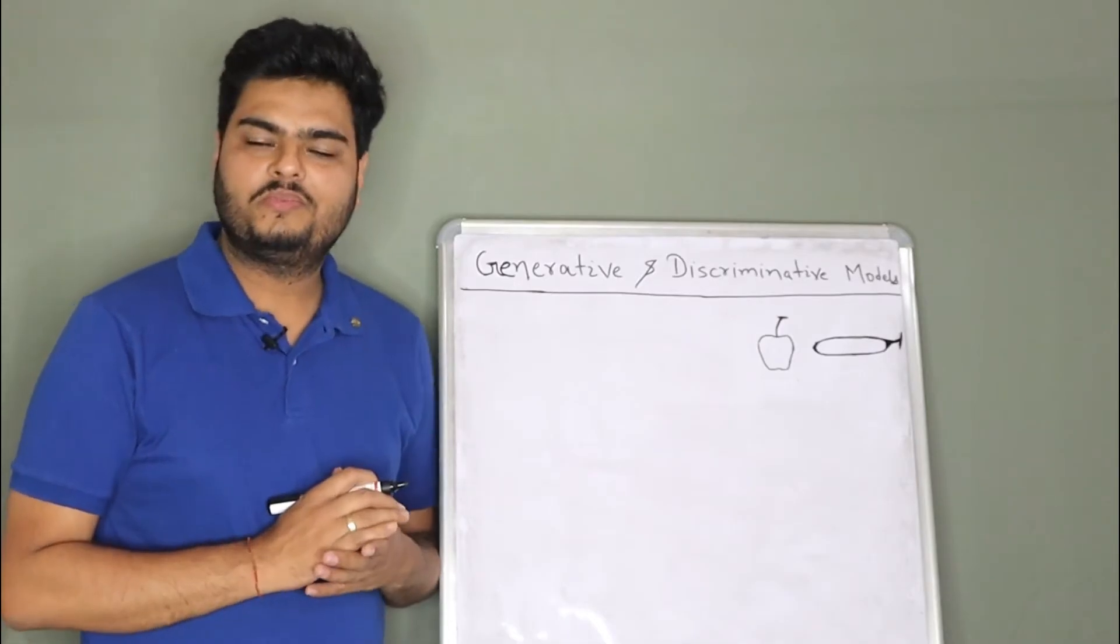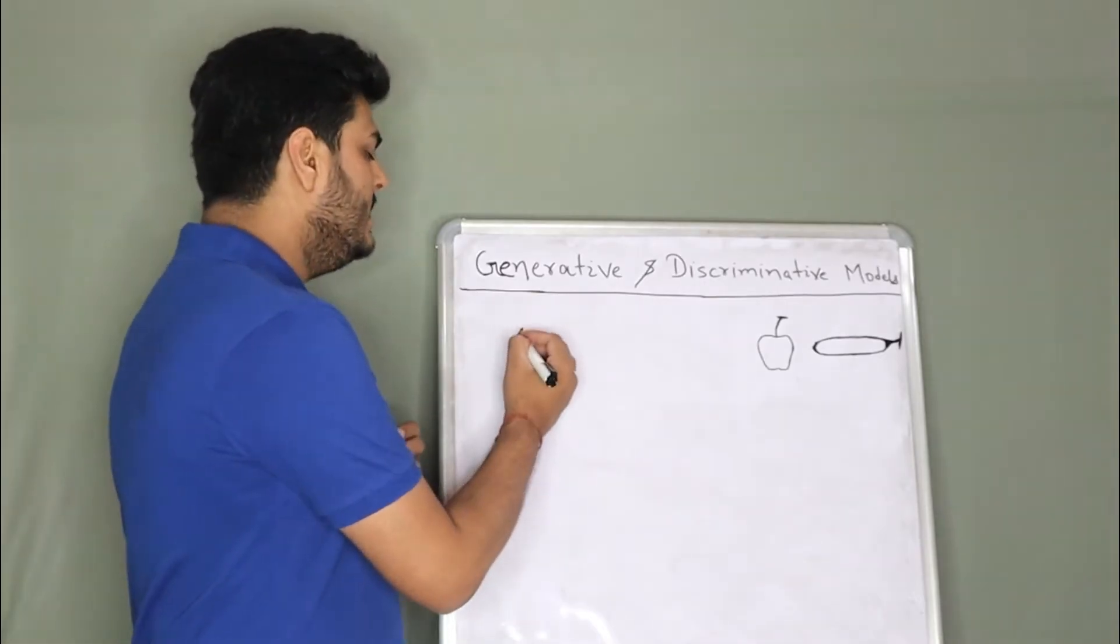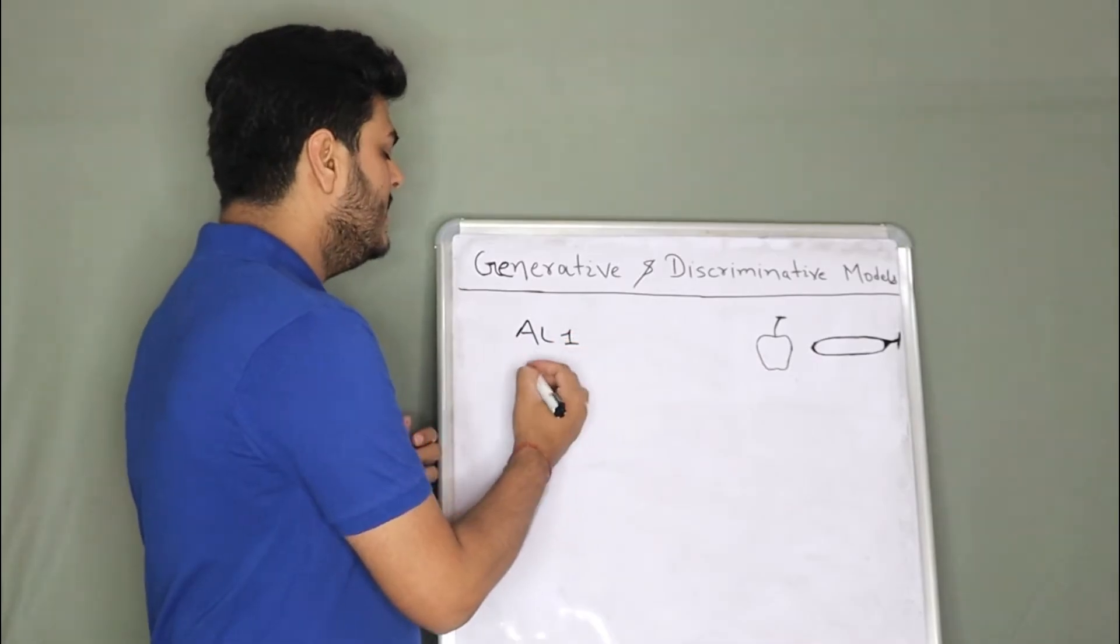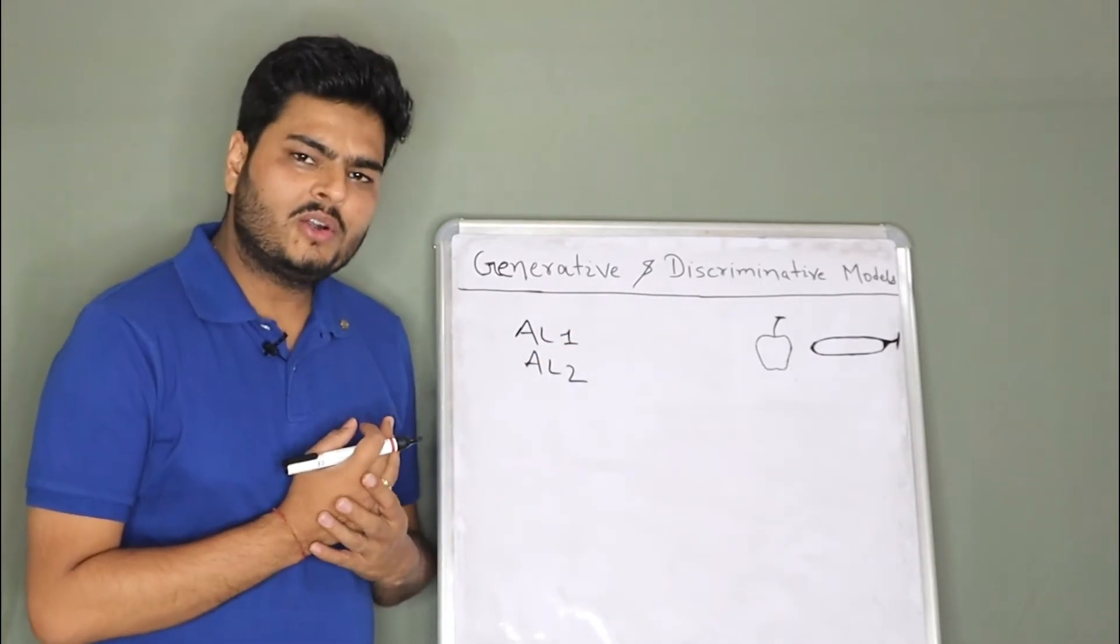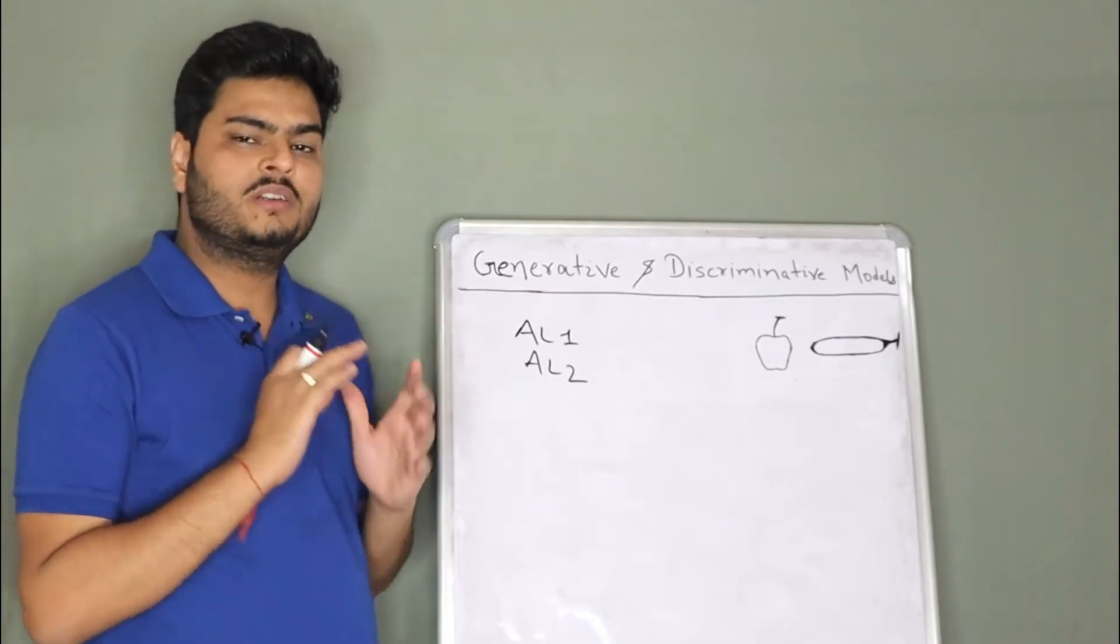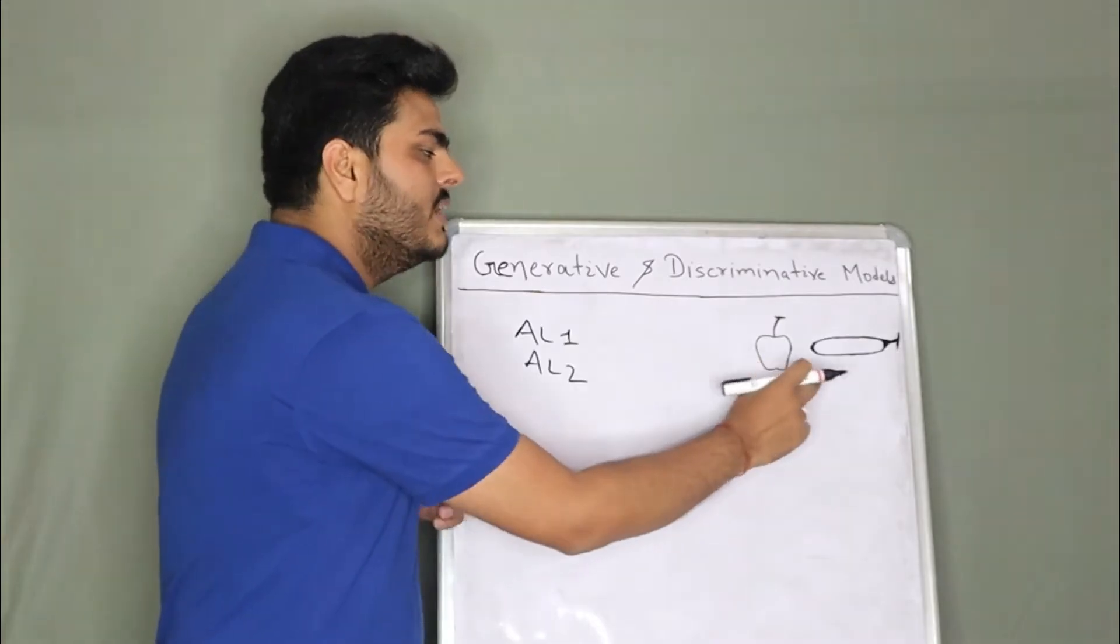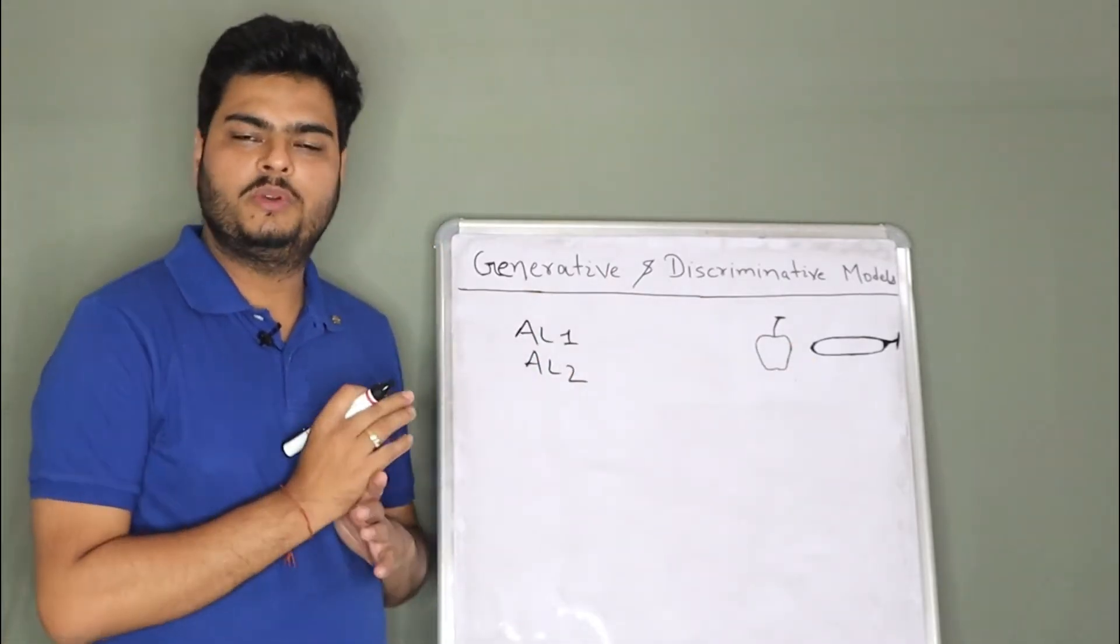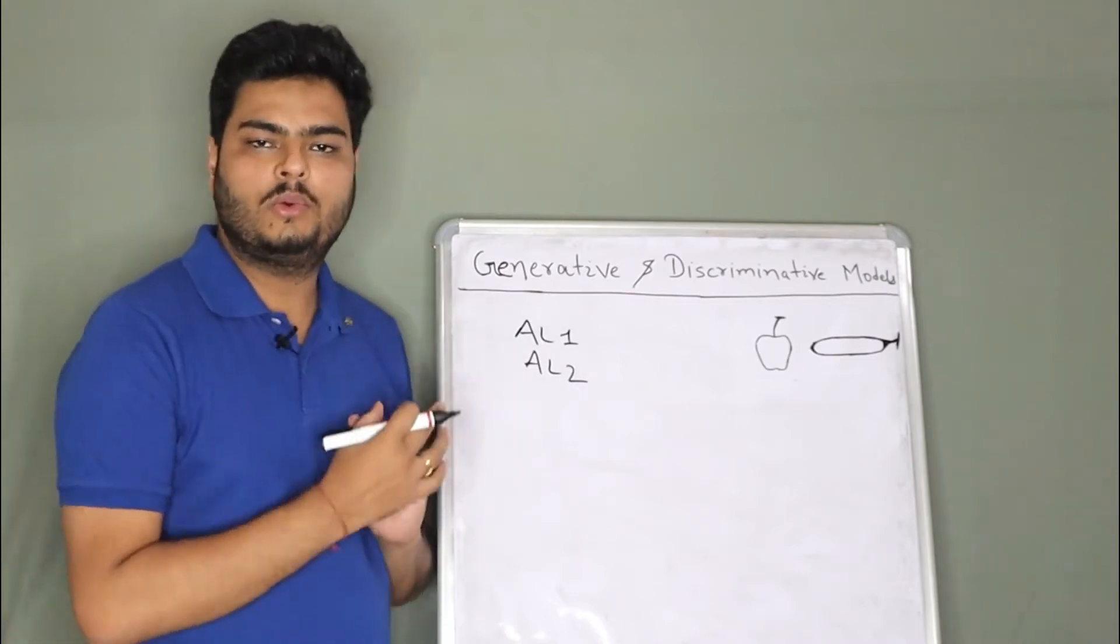Yesterday I met two aliens who had come from some other planet - alien 1 and alien 2. Now me being a data science guy, I thought let's do some experiment with my new friends. So I just showed them many apples and many bananas. They had never seen these fruits before. I showed them this is how apple look like and this is how banana look like.